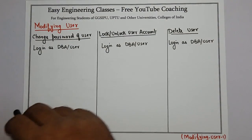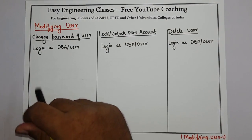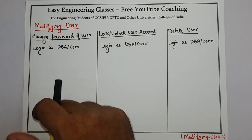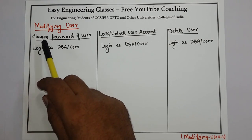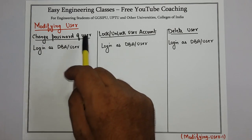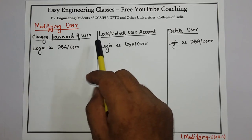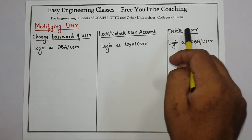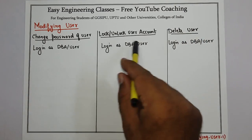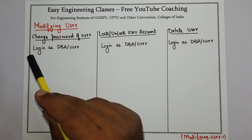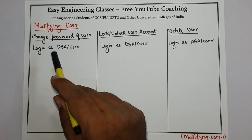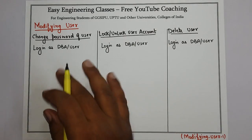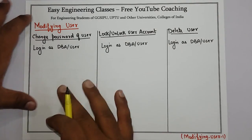Hello, today in this class we will see different commands for modifying a user. The first command is for changing the password of a user, the second is to lock or unlock a user account, and the third is for deleting a user. For all the commands to run properly, you must be logged in as a DBA user.